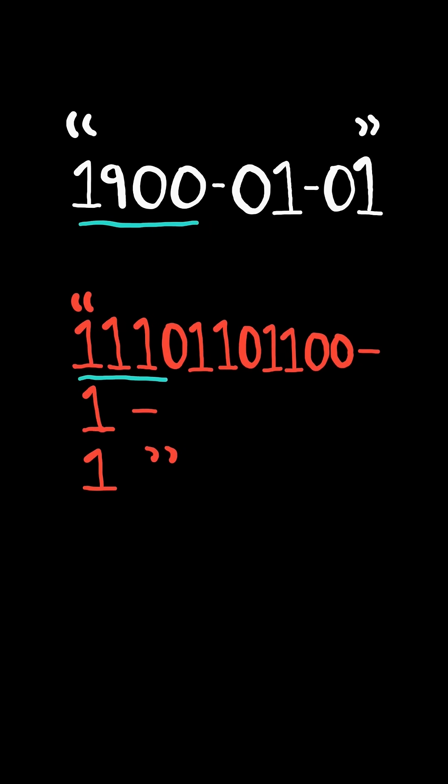We convert the year to its binary representation. We convert the month to its binary representation. And we convert the day. We will solve this in constant time and space.